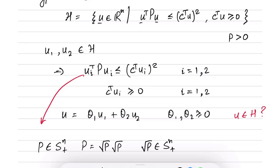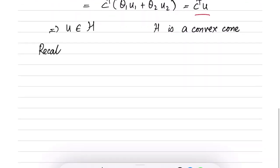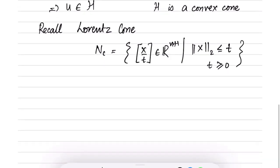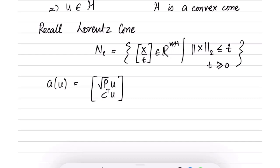We can indeed prove that the hyperbolic cone is the inverse image of a Lorentz cone. Recall the norm cone: the set of (x, t) in R^(n+1) such that ‖x‖ ≤ t and t ≥ 0. Consider the affine transformation A(u) = (√P u, c^T u). The input u is in R^n and the output A(u) is in R^(n+1), with B = 0.